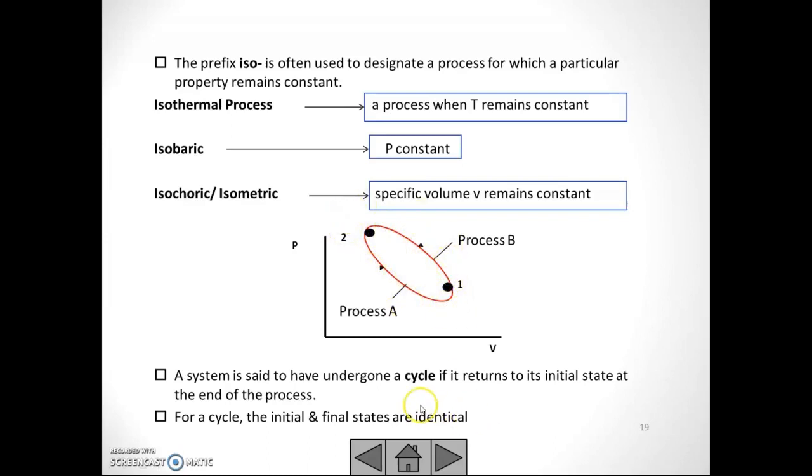It is called a cycle because it returns to its initial state at the end of the process. For a cycle, the initial and final states are identical.